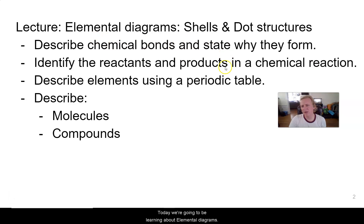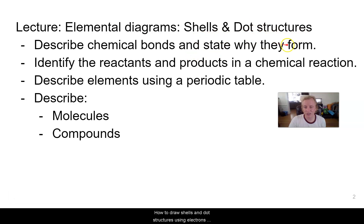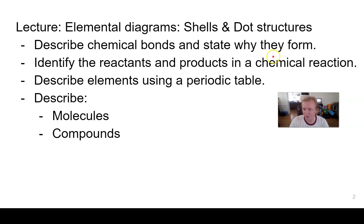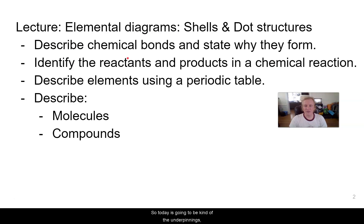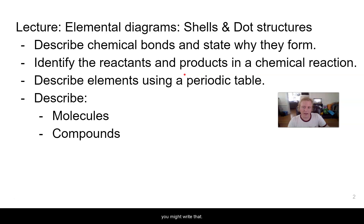Today we're going to be learning about elemental diagrams. We're going to be talking about how to draw shells and dot structures using electrons. Don't worry, this is all new terminology. We're going to be describing chemical bonds and why they form — today is going to be the underpinnings of that, and we'll get into details in a future lecture. We're also going to be identifying the reactants and products in a chemical reaction and how you might write that in a chemistry sort of way.